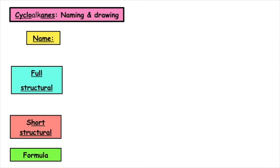So let's have a go at naming and drawing the cycloalkanes. The first member of the cycloalkanes is known as cyclopropane. This is because we've got to have a minimum of three carbons to form a ring structure.